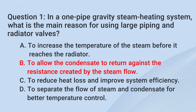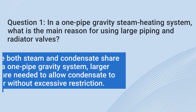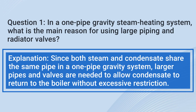The correct answer is B. To allow the condensate to return against the resistance created by the steam flow. Since both steam and condensate share the same pipe in a one-pipe gravity system, larger pipes and valves are needed to allow condensate to return to the boiler without excessive restriction.